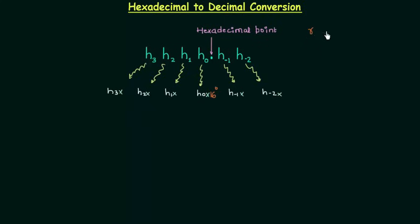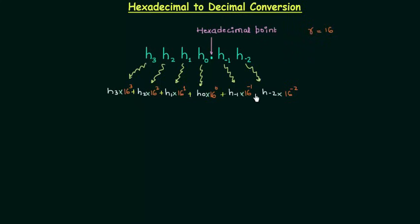The base in the case of hexadecimal number system is equal to 16. I will multiply H1 by 16 raised to power 1 — the weight of this position. In the same way, H2 will be multiplied by 16 raised to power 2, and H3 by 16 raised to power 3. For the fractional part, H-1 will be multiplied by 16 raised to power minus 1, and H-2 by 16 raised to power minus 2. We add them all, and the sum is equal to the decimal equivalent — the same process as octal to decimal and binary to decimal.